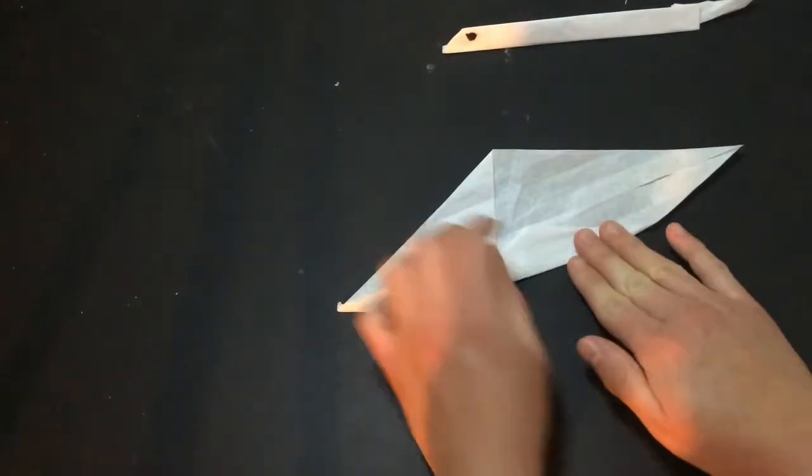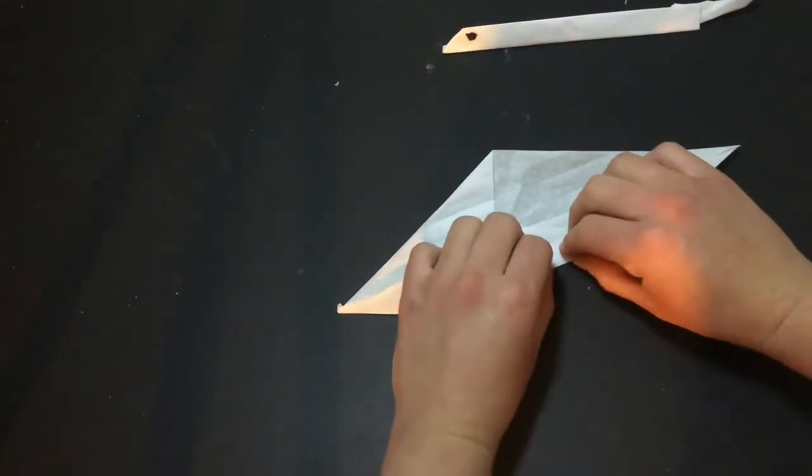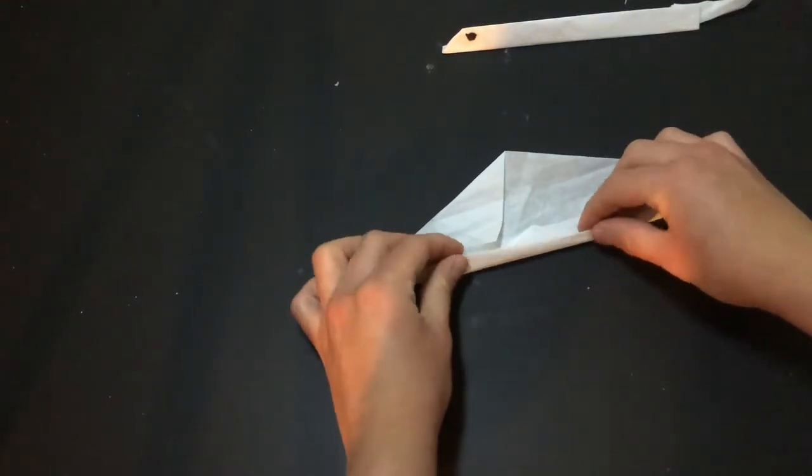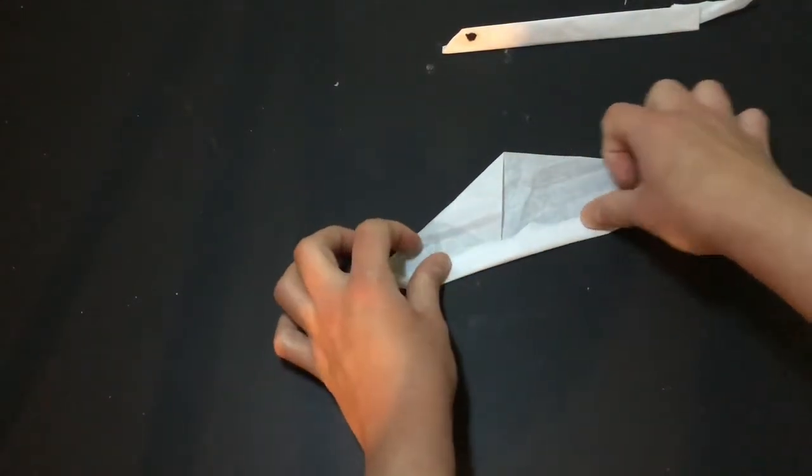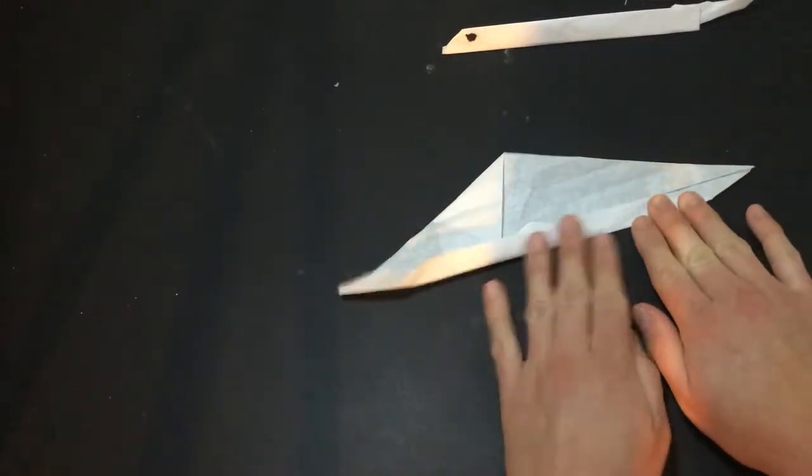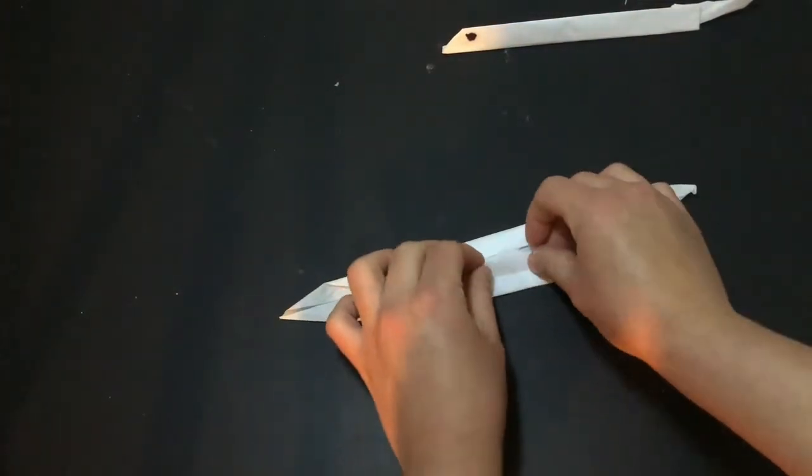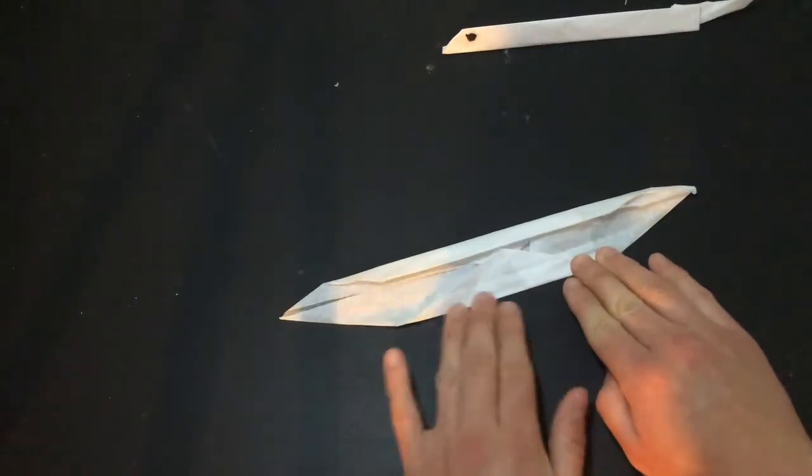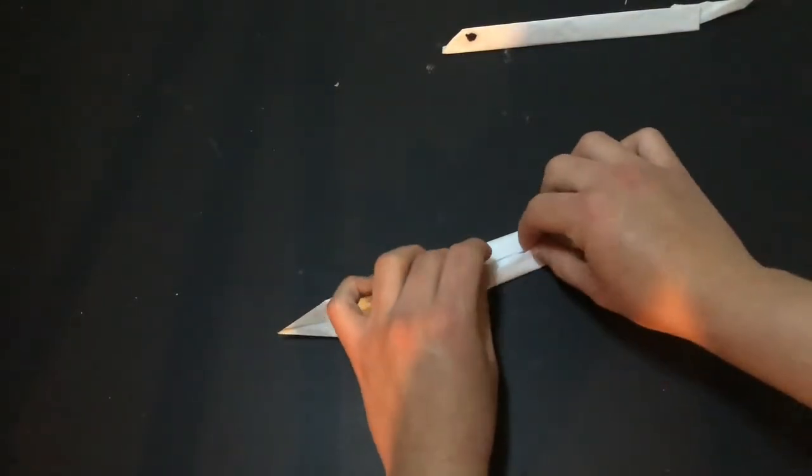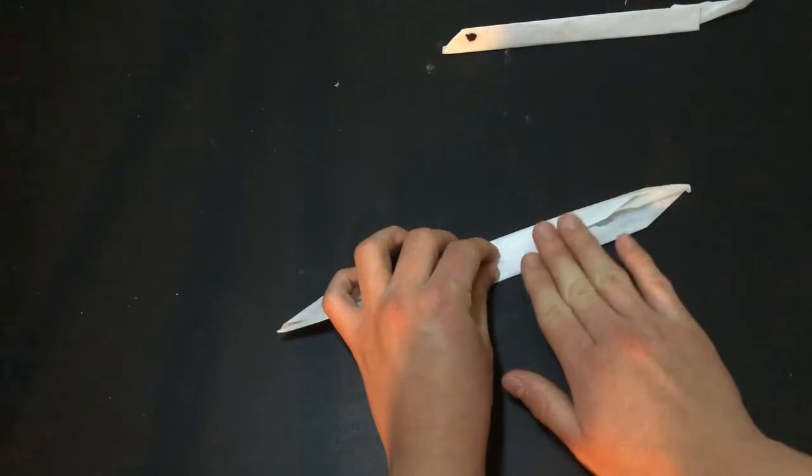Then we're gonna take those corners and fold it in so we get a nice flat edge, and then we're gonna fold it in again. So we're folding in both of the corners twice so that our eel is nice and thin, and we're gonna do that on both sides. Again, fold that corner into this middle and then fold that whole side over again.